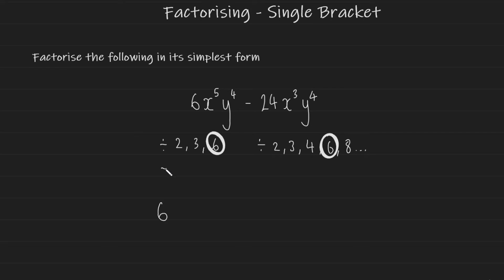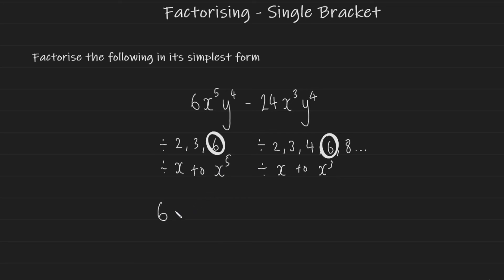So 6 goes outside the bracket. Now for the x values: for the left term x⁵, I can divide by x up to x⁵, including x², x³, x⁴. For the right term x³, I can divide by x up to x³. The highest common factor is the variable with the lowest power, so x³ is the highest common factor and goes outside the bracket. For the y's, it's y⁴ in both terms, so y⁴ goes outside directly as it is the highest common factor in both.